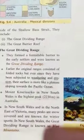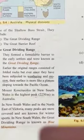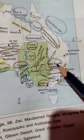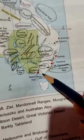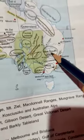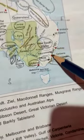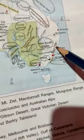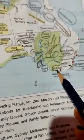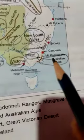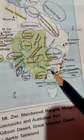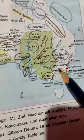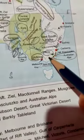In New South Wales and in the north-east of Victoria, many peaks are covered with snow and are known for winter sports. In New South Wales, the Great Dividing Range is known as Blue Mountains. In Victoria State, they are called Australian Alps. A number of rivers like River Murray and River Darling originate from these mountains, and their waters are used for generating electricity.